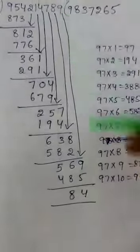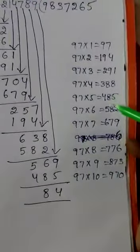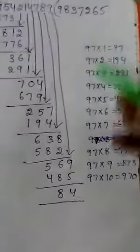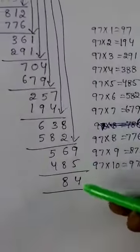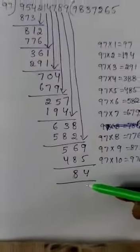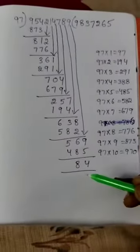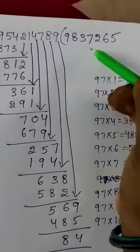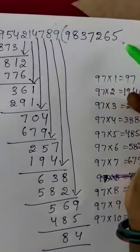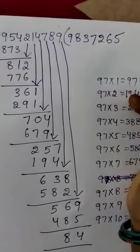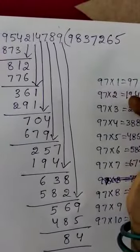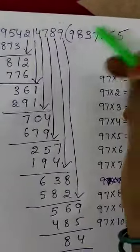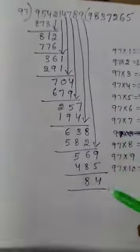Last number — the 9th step is 569. 569 gives 5 times. So 5 times 485. Minus gives remainder 84. The quotient is 9837265.